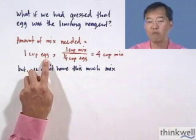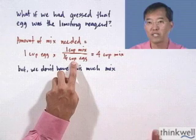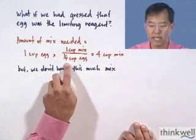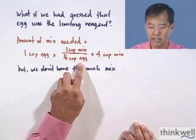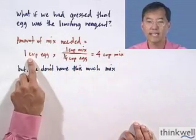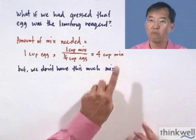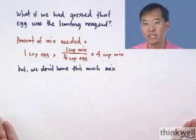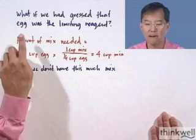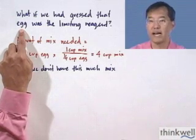So we have one cup of egg — that's what we had in our refrigerator — and we multiply it by a fraction that comes from the balanced reaction. For every cup of mix, we only need one quarter cup of egg. And so we would need, for our one cup of egg, four cups of pancake mix. Well, we don't have four cups of pancake mix. And since we don't have four cups of pancake mix, that means that our initial guess that egg was the limiting reagent is incorrect.